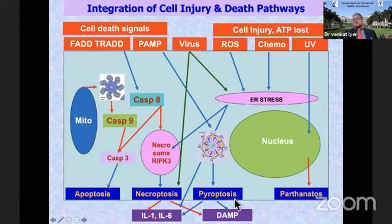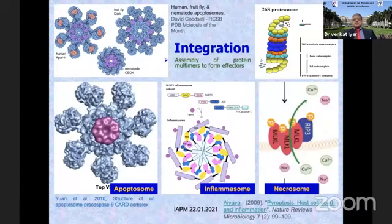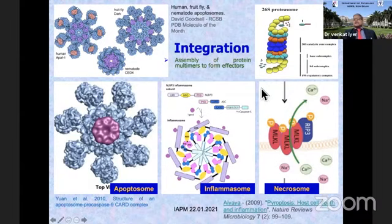So apoptosis is contained within the cell, while necroptosis and pyroptosis go beyond the cell to injure the tissue and the entire organism. These complex molecular motors — the apoptosome, inflammasome, necrosome, and proteasome (whose function is to degrade all proteins) — are illustrated here.